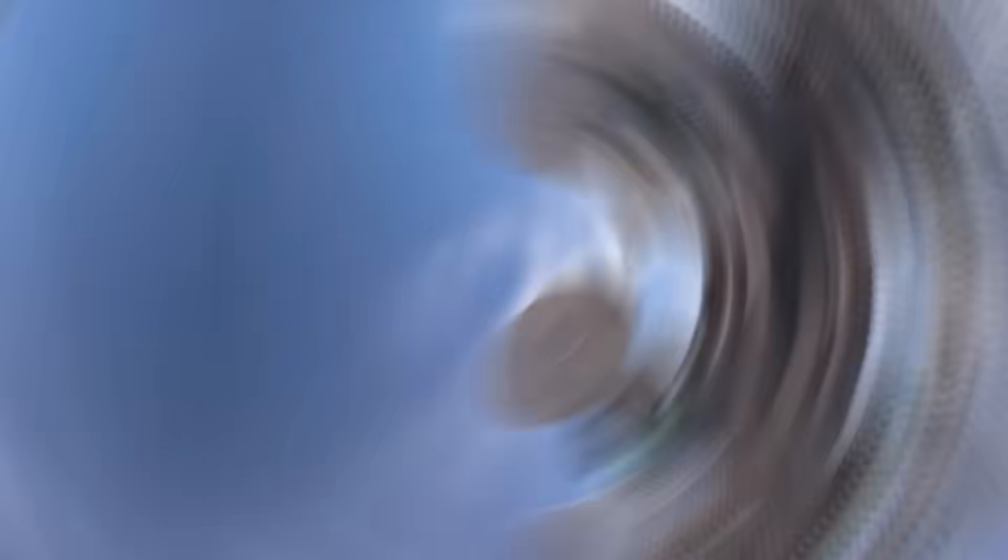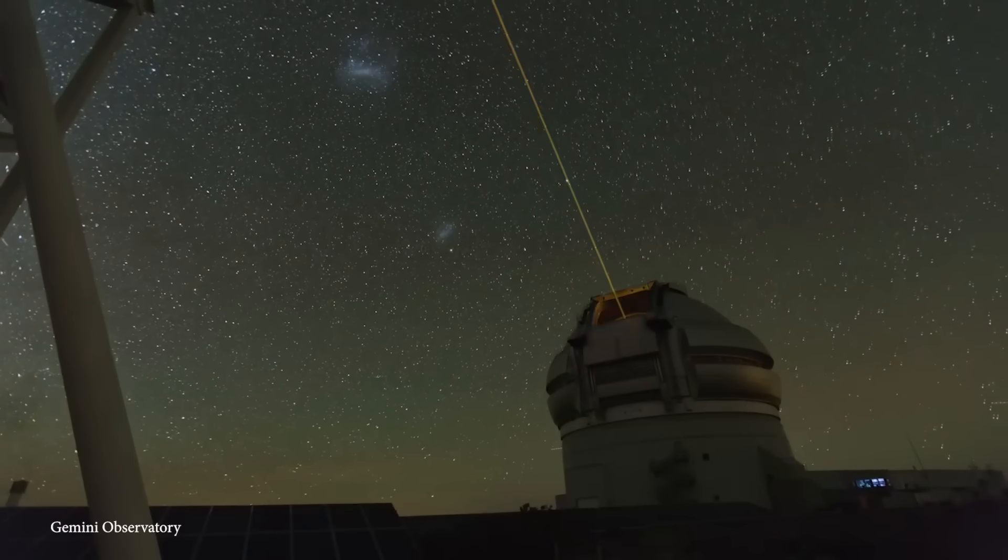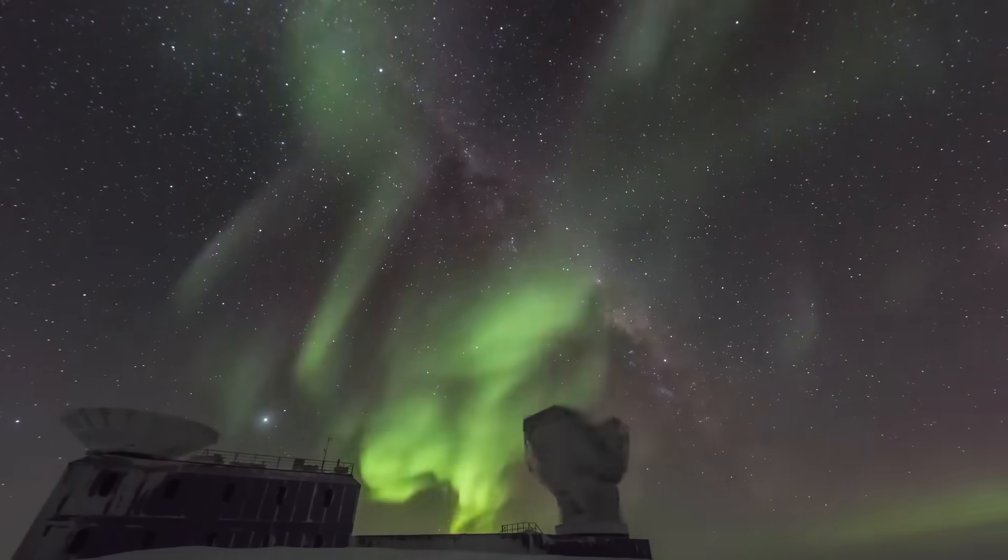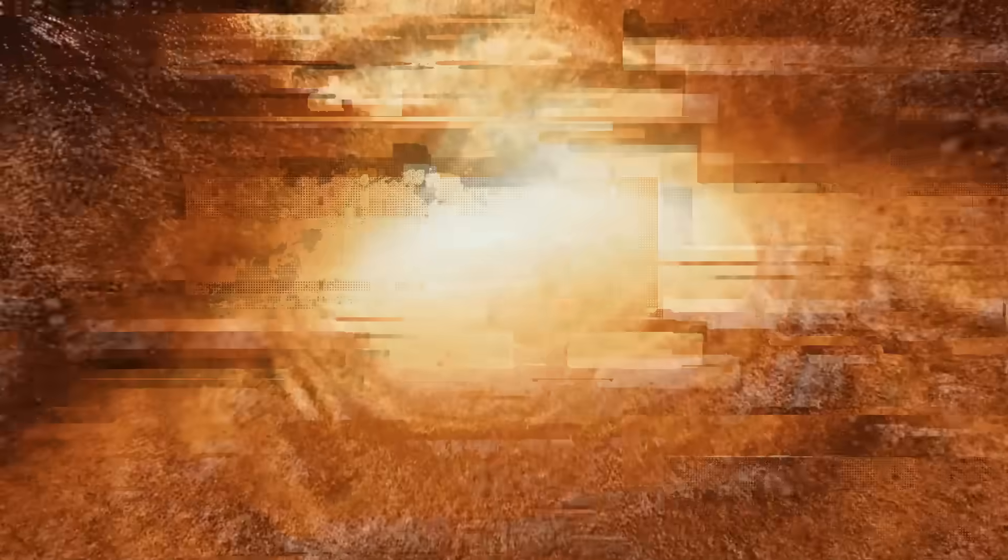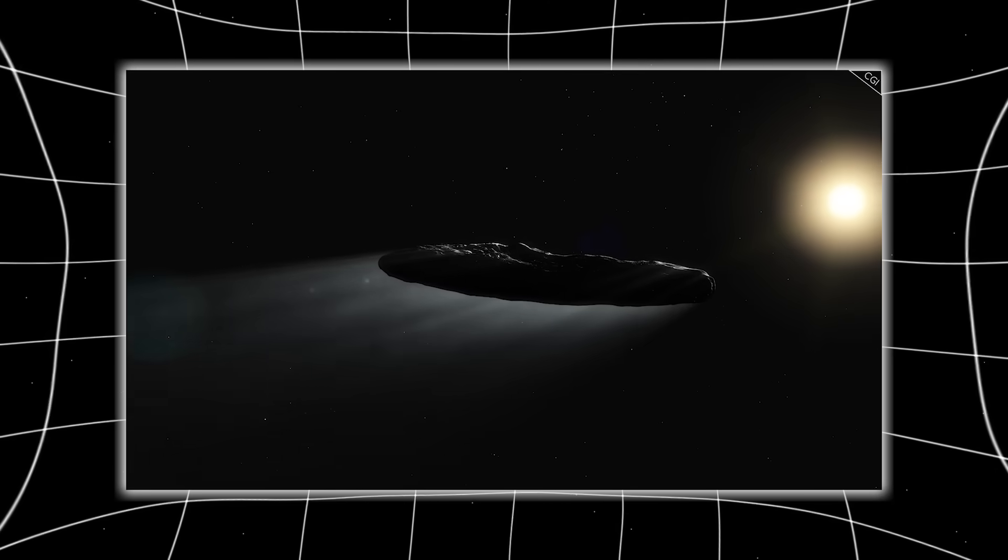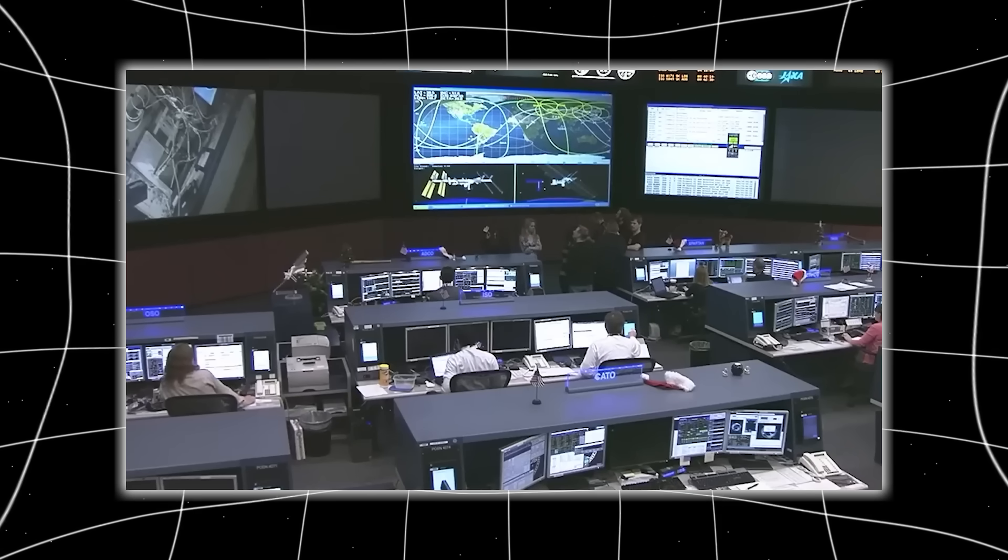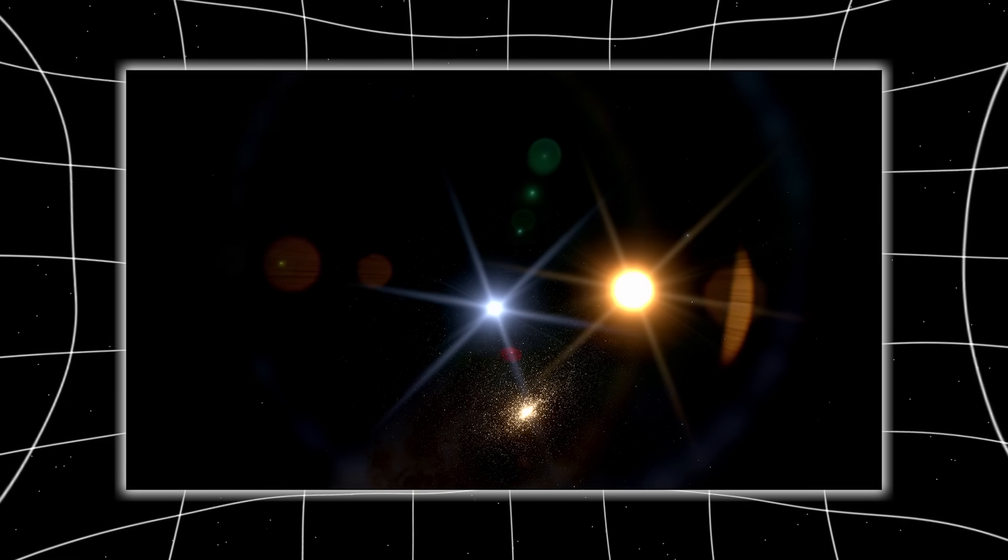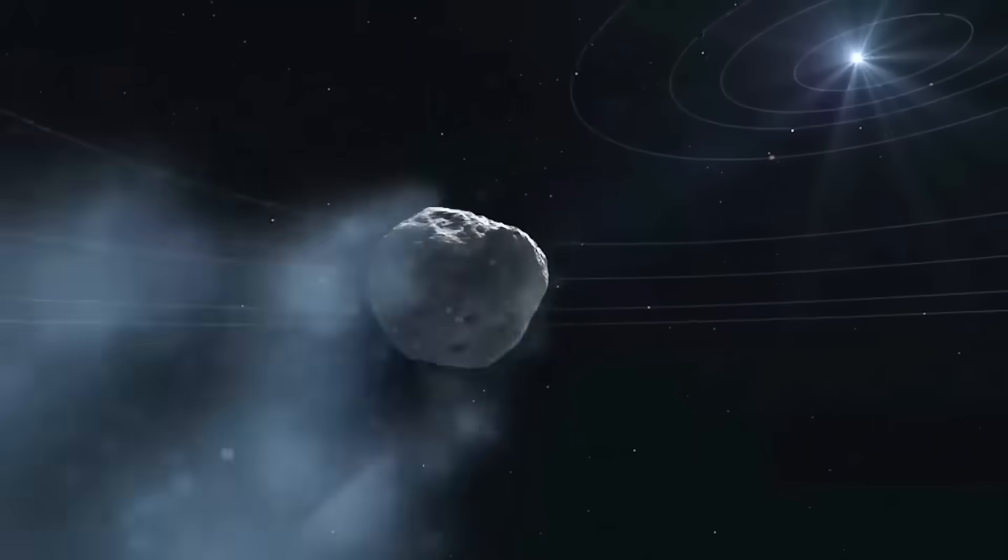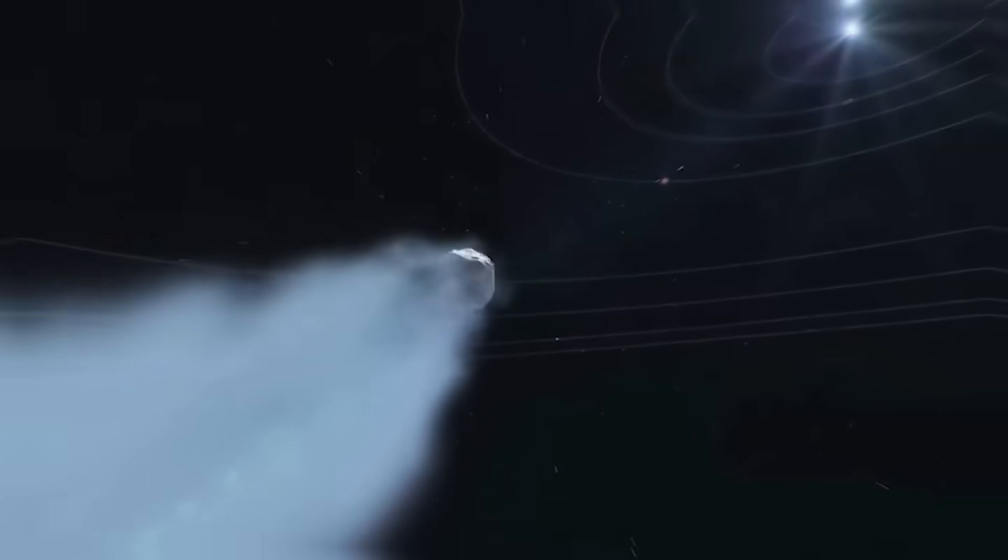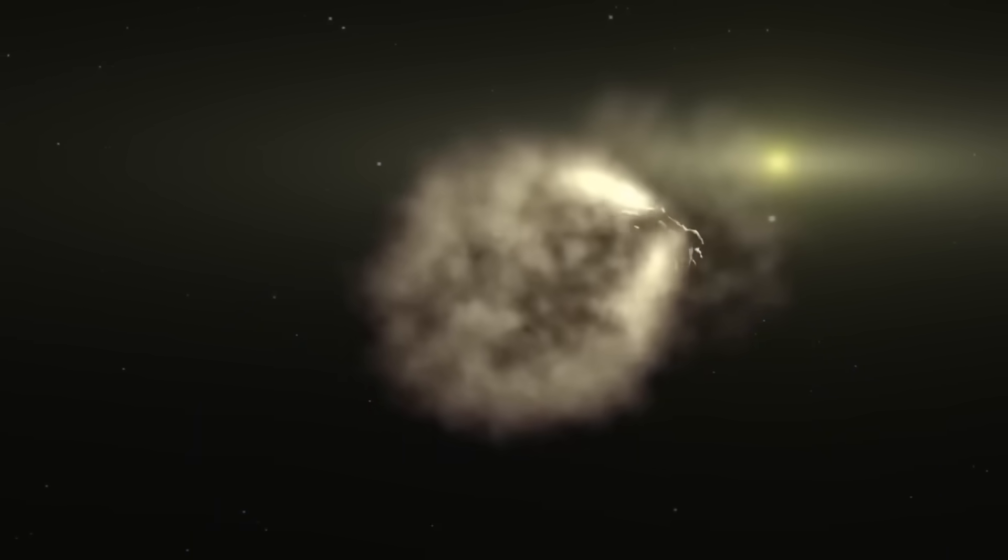For the first time in history, the International Asteroid Warning Network, a United Nations-endorsed Global Defense Coalition, has begun tracking an object from another star system. Because new data suggests that 3I Atlas isn't where it's supposed to be. If this object really altered its trajectory while near the sun, then what we're witnessing may not just be an astronomical anomaly. It could be intentional.